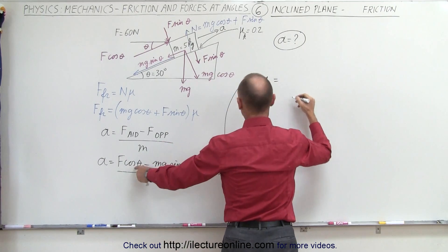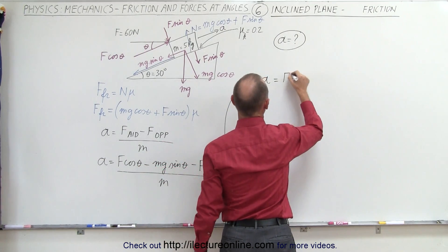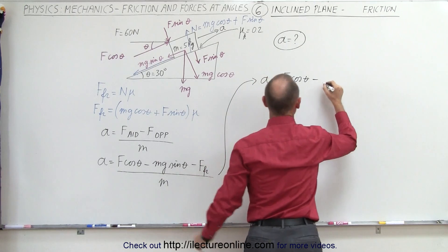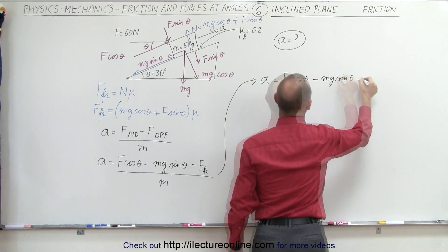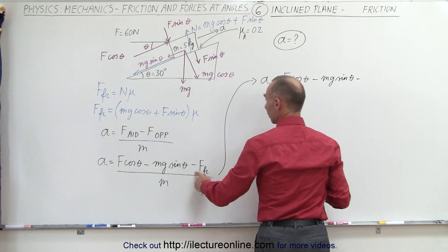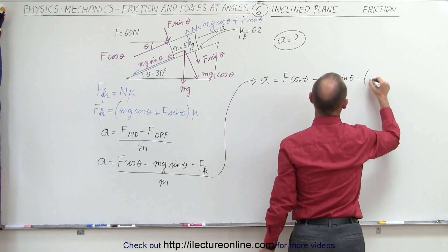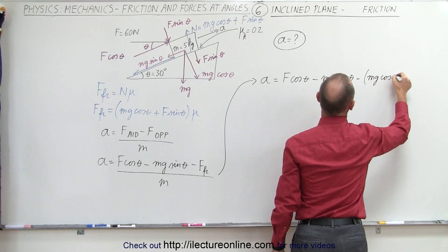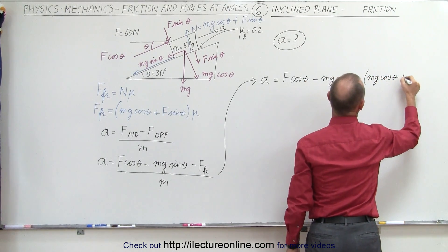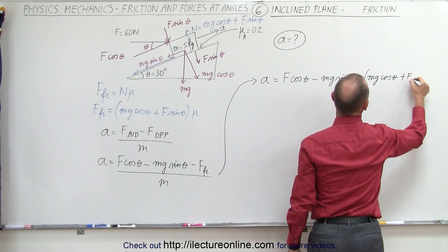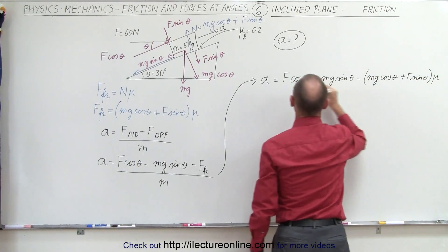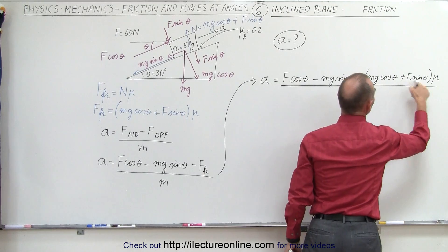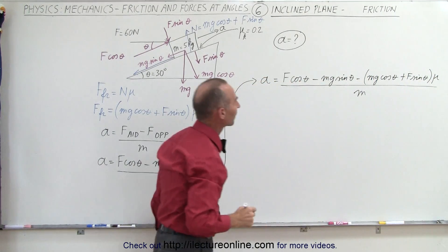Let's plug in what that is equal to. Acceleration equals f cosine theta, minus mg sine theta, minus the friction force — which is (mg cosine theta + f sine theta) times mu — all divided by m.